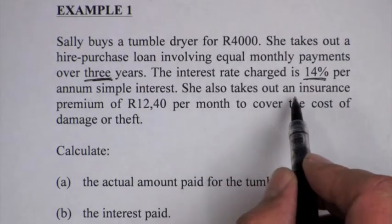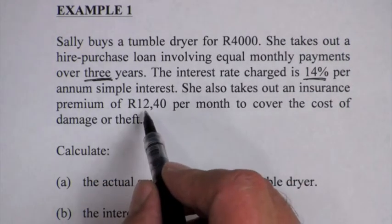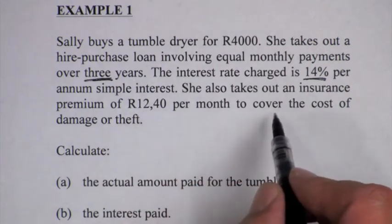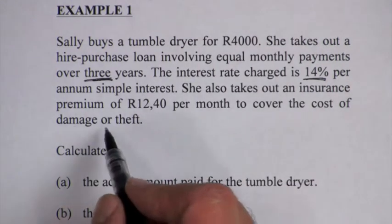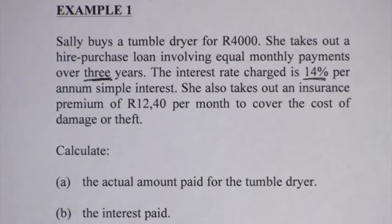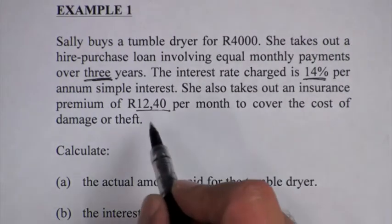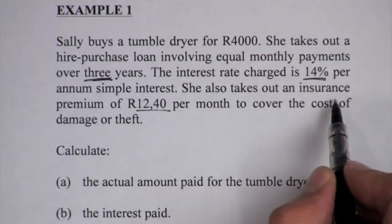She also takes out an insurance premium of 12.40 Rand per month to cover the cost of damage or theft. So that is the insurance payment. That is not part of the loan. That is separate, something separate which is the insurance.